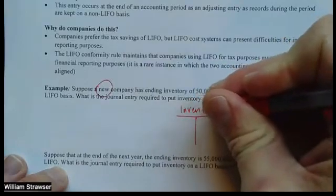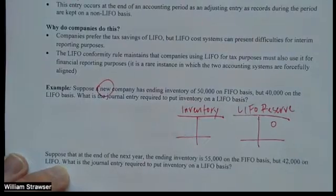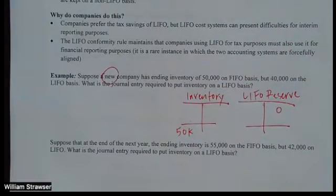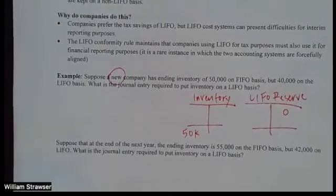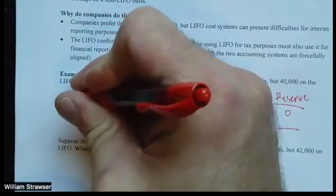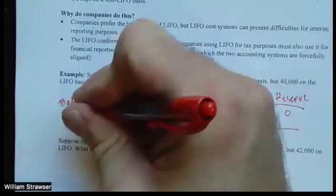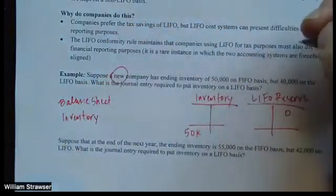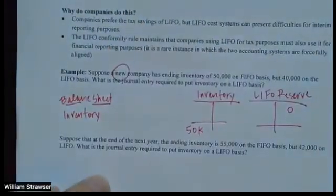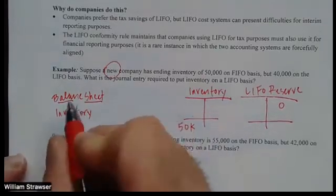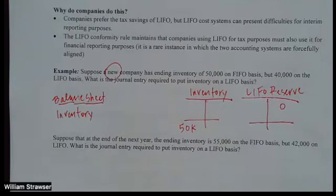The inventory account at the time we want to report is on the non-LIFO basis — it has $50,000 because we're using FIFO — but we want to report $40,000 on LIFO. What companies want to do is report their inventory at LIFO levels on the balance sheet so they can use it for taxable income. Remember that LIFO has a very specific rule called the LIFO conformity rule, which forces companies that elect to use LIFO for tax purposes to have their financial reporting be identical to their tax reporting in this one rare circumstance.